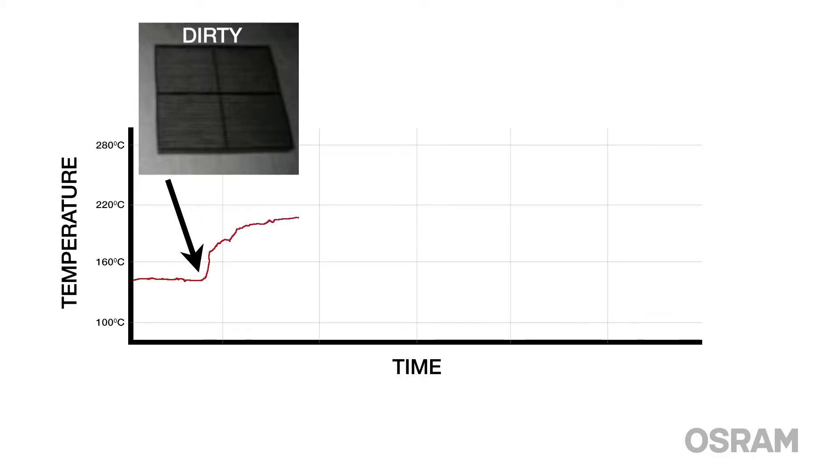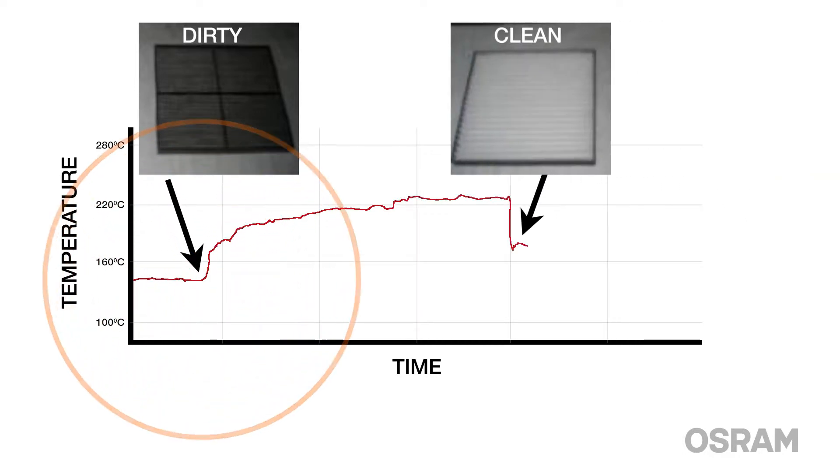On the x-axis we are tracking time and on the y-axis we will be tracking temperature. Pay attention to the temperature spike when a clean filter is exchanged for a dirty one and the drop when a clean filter is used again.